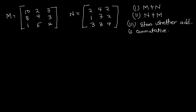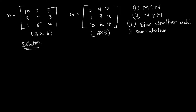Let's write down the solution. First we need to check whether the order of the matrices are the same. Matrix M has three rows and three columns — it is a 3×3 matrix. Matrix N also has three rows and three columns — also a 3×3 matrix. Since the orders are the same, we can add them easily.